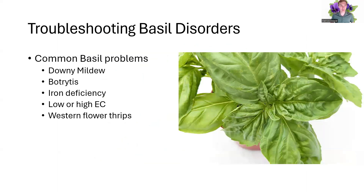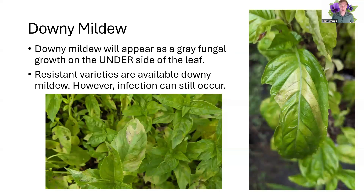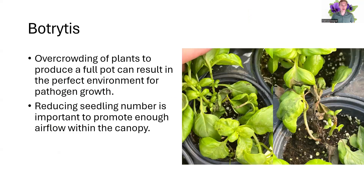Next are some of the common problems we've seen in basil, starting with downy mildew being the most prevalent. Downy mildew is going to occur on the underside of the leaf as a gray fungal growth. Compared to powdery mildew, which is on the upper side of the foliage, downy mildew is on the bottom side, and there are many resistant varieties available. However, infection can still occur. Botrytis — we've seen this with growers overcrowding the pot, putting in too many seeds for too small a container, which closes up the canopy and creates the perfect environment for fungal growth due to low airflow. Reducing seedling number for the container size to allow airflow through the canopy is very important.